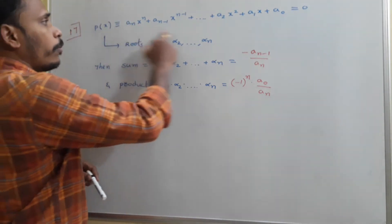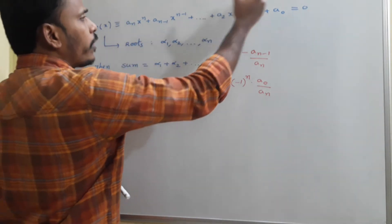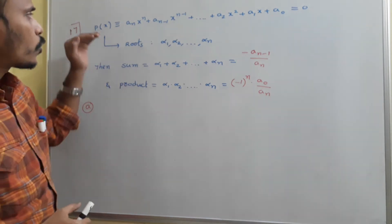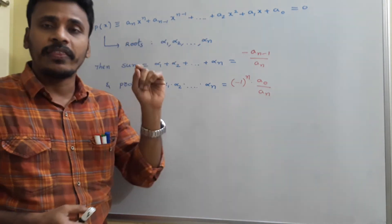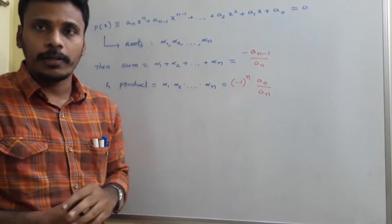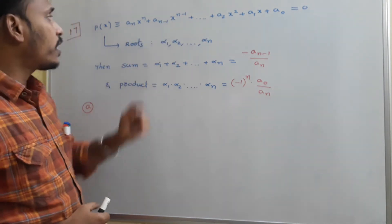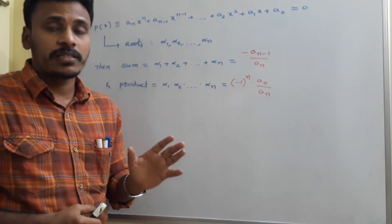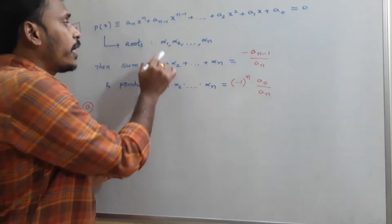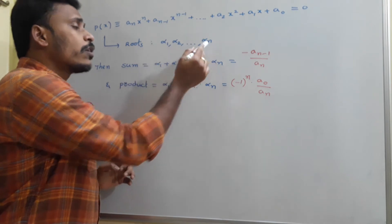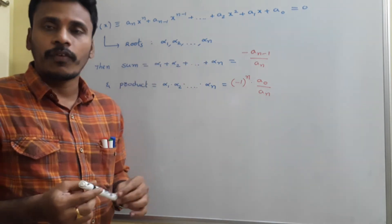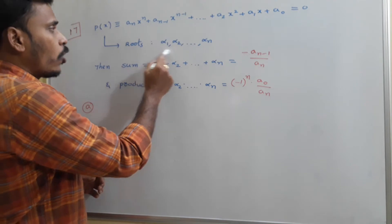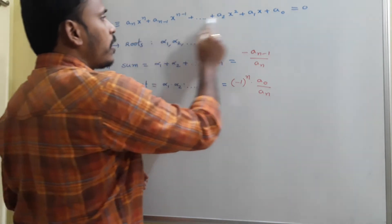If I have a polynomial P(x) equal to 0, it is a polynomial equation. With aₙxⁿ and so on, it is an nth degree polynomial. Since it is an nth degree polynomial, by the fundamental theorem, it has n roots. We mention them as α₁, α₂, and so on up to αₙ. These are n roots and this is the polynomial.